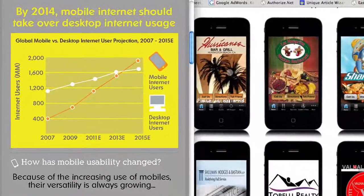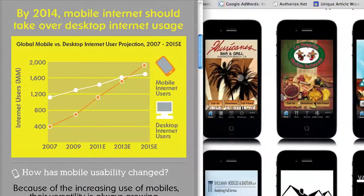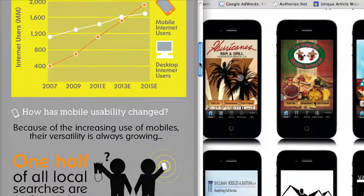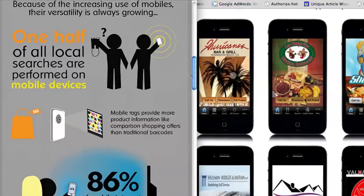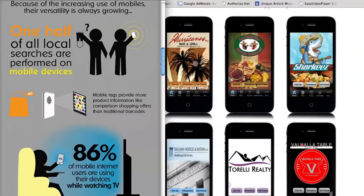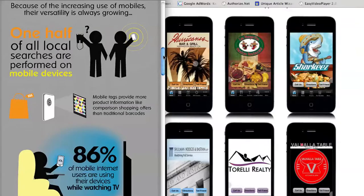Check out this pretty cool infographic I got from digitalbuzzblog.com — if you want more stats and great information, go check out their site. By 2014, mobile internet should take over desktop internet usage. One half of all local searches are performed on mobile devices. 86% of mobile internet users are using their devices while watching TV. Now this infographic is almost two years old, so these stats are even higher today.